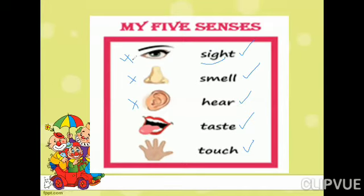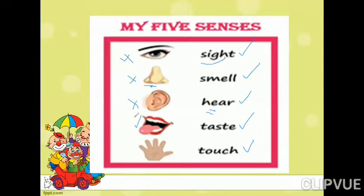Eyes — what is the organ? Then nose. With the help of our nose we can smell — nose is the sense organ for smell. Then ears — ears is the organ and hearing is the sense. Then tongue — tongue is the sense organ for taste. Then we have skin — skin is the sense organ for touch.